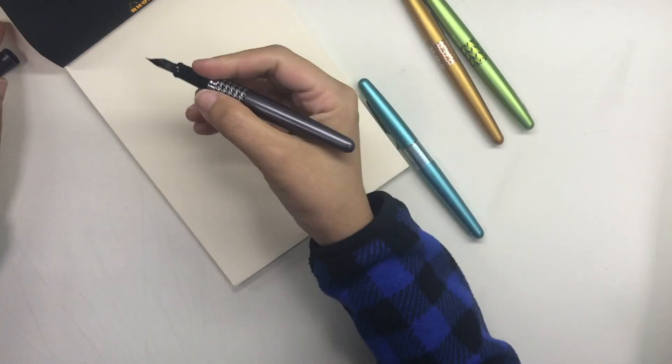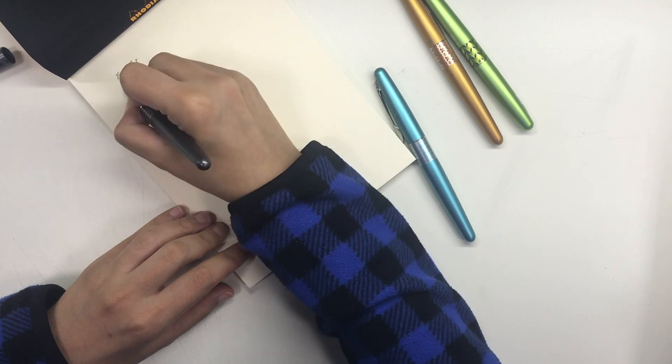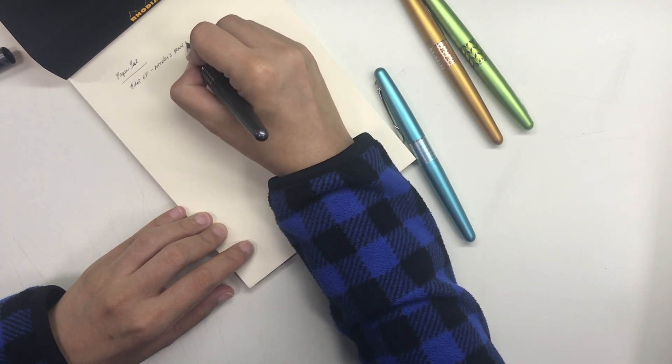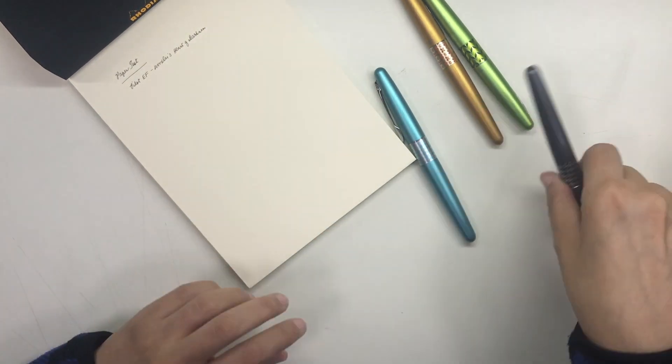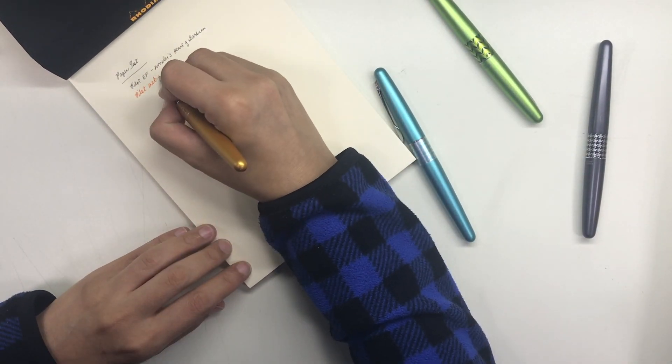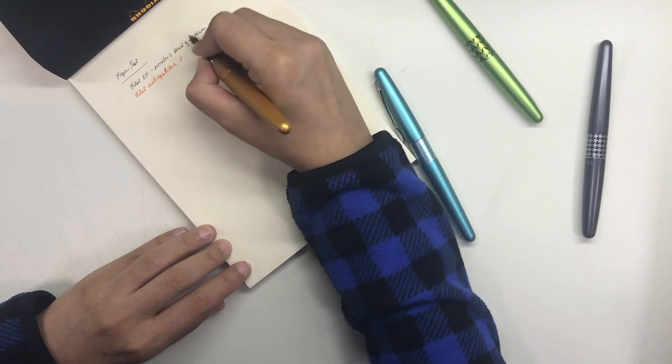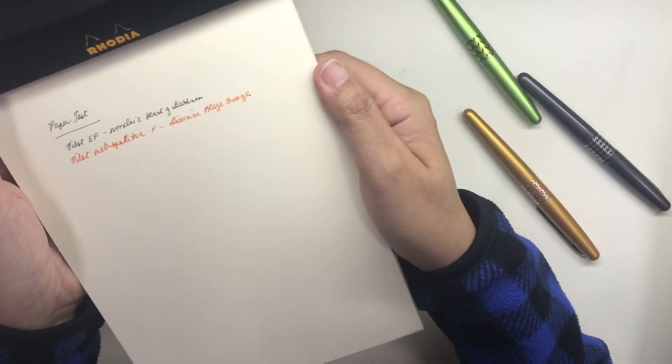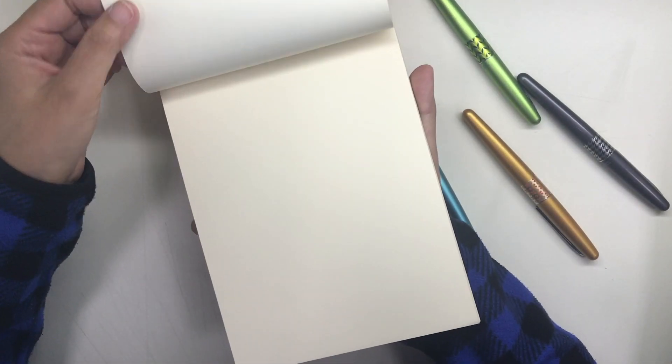But of course the deciding factor would be the performance of the paper with the pens that I use every single day on my planner pages so I tested them out on both papers. I used a Pilot Metropolitan with an extra fine nib that was taken from my Pilot penmanship. I have a video about the nib swap and I will link it down below.